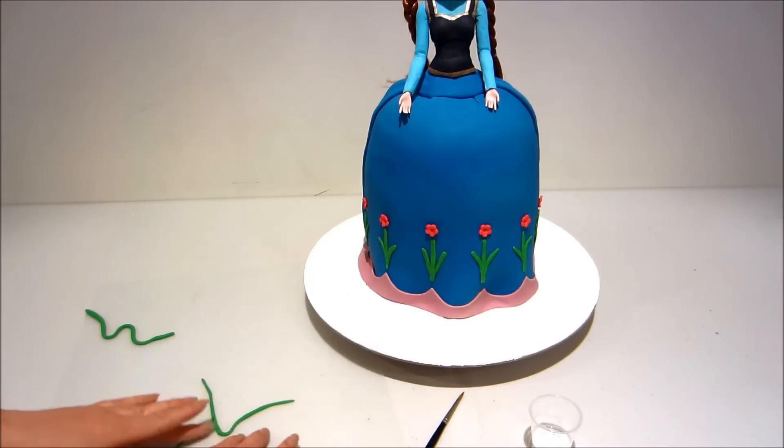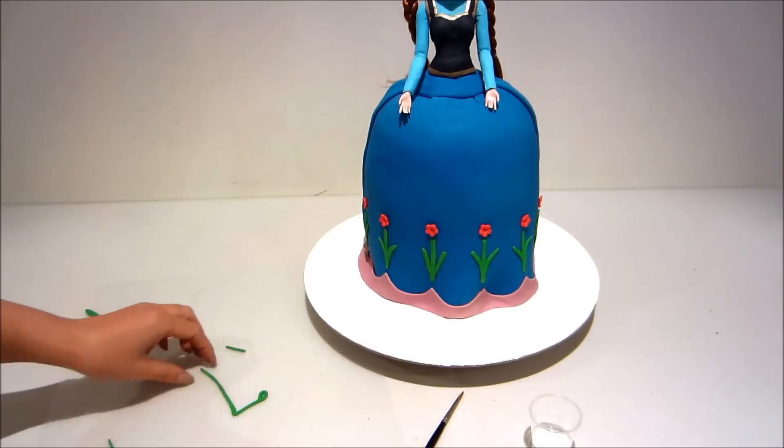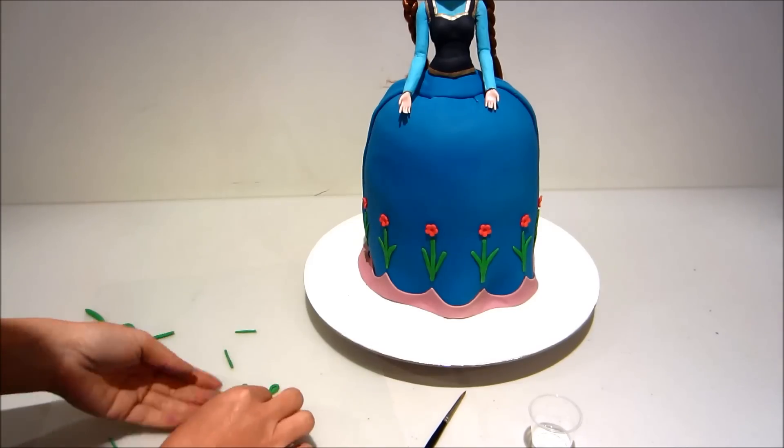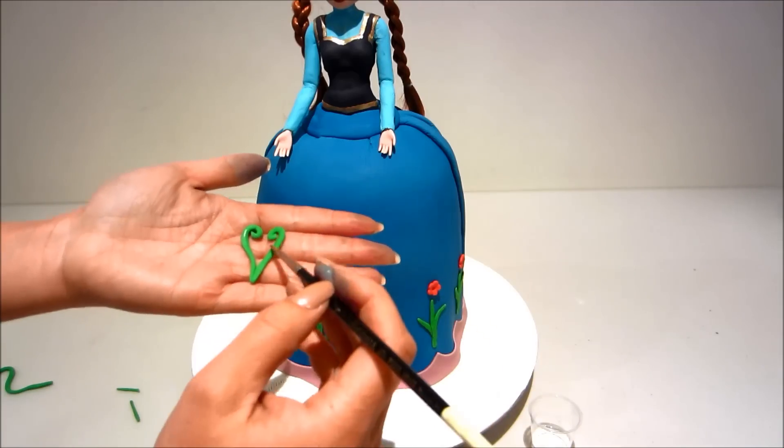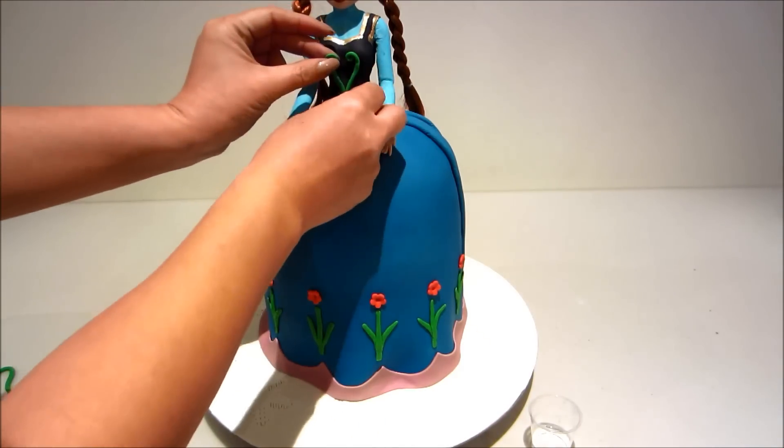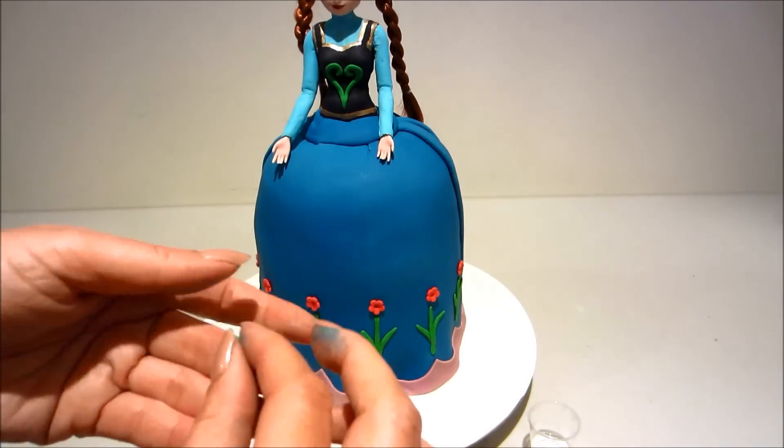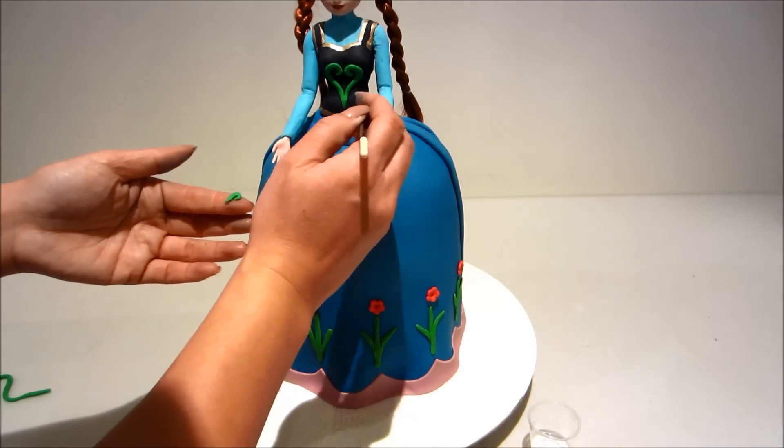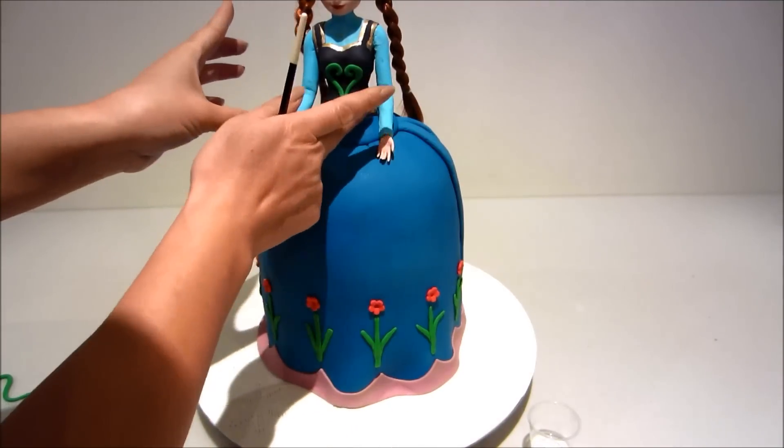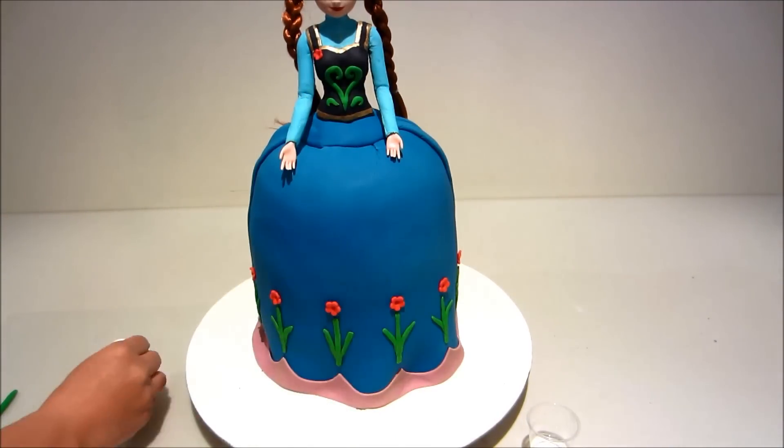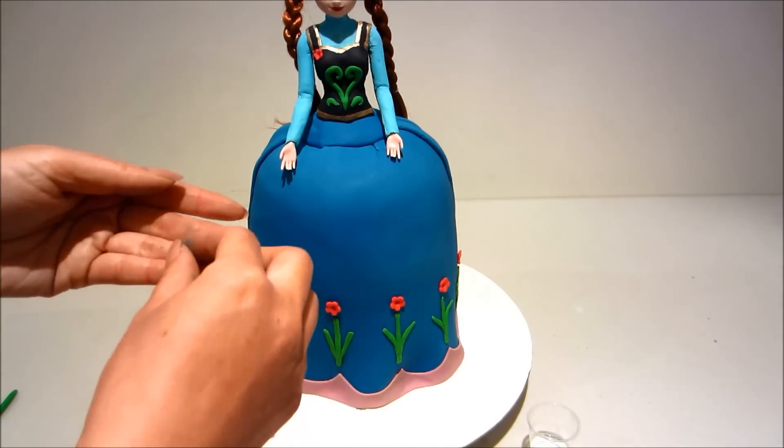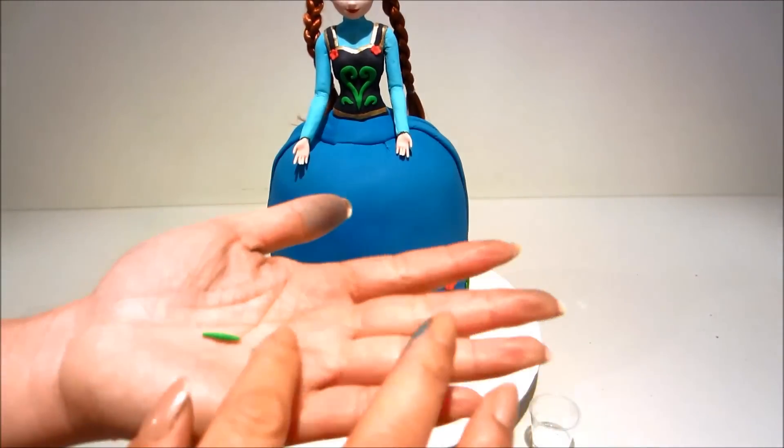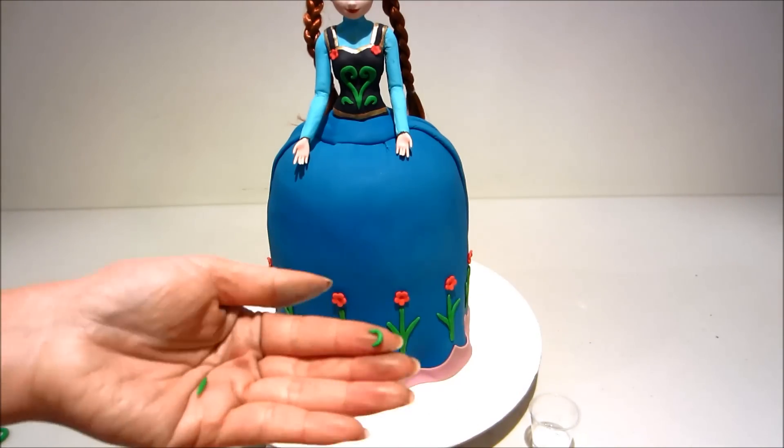Okay now back to the green. I'm shaping some little shapes just to form the details on the top of her dress. And I'm using a tiny little blossom cutter just to cut our little flower and sticking it on, finishing the top off.